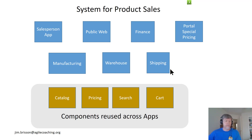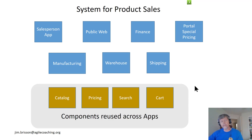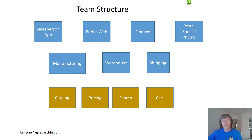There are some components that are reused across many, if not all, of these different applications. So your organization has put these components into a separate section of the organization. The catalog, pricing, search, cart — there's a variety of components in here that have separate teams. The team structure follows the organizational structure basically, very closely. So there are teams associated with the various applications and specific teams associated with the reused components — a specific team on catalog, for example, and a specific team on finance.